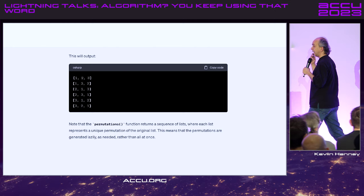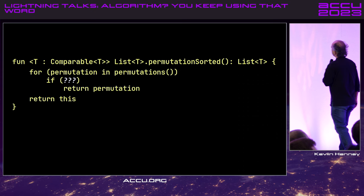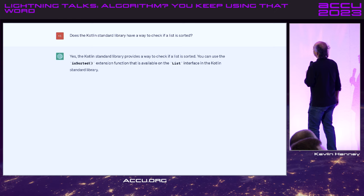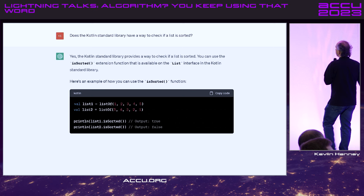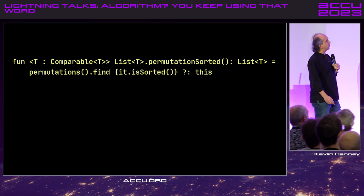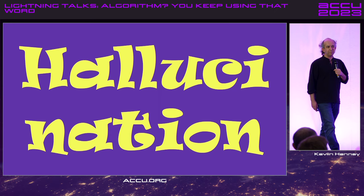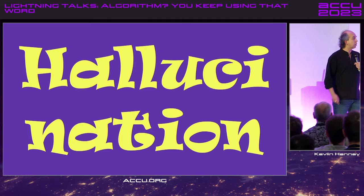So I'm going to write something like this — it's an extension method, 'permutation sorted,' I'm going to iterate through the permutations, and if it's sorted, return it. I also asked what the Kotlin standard library has for checking if a list is sorted. It said you can use the 'isSorted' extension function available on the list interface. This is very intuitive and gives elegant code — really nice, really elegant. Except for one small problem: it's a complete hallucination. None of the functions that ChatGPT so confidently described actually exist, even though they were rendered in loving detail, right down to correctly using lazy evaluation and sequences within Kotlin.